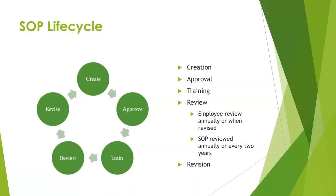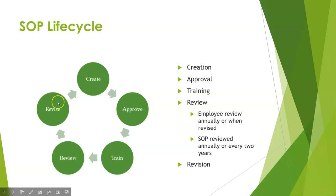SOPs have a lifecycle. This lifecycle typically involves creating the SOP, getting stakeholders to review and approve it, training everyone who will perform the task, and then maintaining an ongoing review cycle. Even if an SOP doesn't change, employees should still review it every year or two. If it has been revised, they need to review the revised version because expectations have changed. As an organization you review the SOP annually or every two years to determine if it needs updating. When you look at an SOP you'll typically see an effective date and a review date one or two years out.